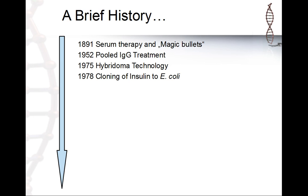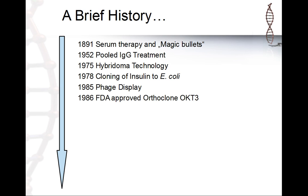During this time, insulin for diabetes mellitus was also cloned into the Escherichia coli bacteria. Then another very powerful technique, still used today, was developed: phage display to produce monoclonal antibodies. The first monoclonal antibody approved by the FDA was OKT3 (Orthoclone OKT3).